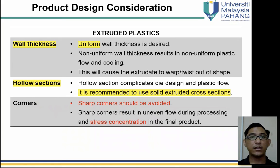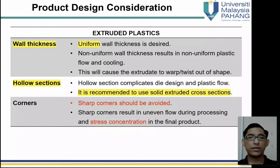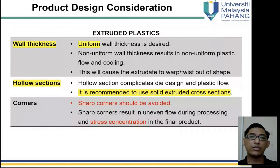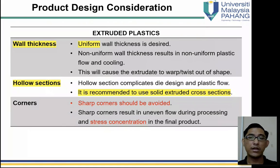For extrusion of plastics, the primary design consideration is that uniform wall thickness is desired. If we want to produce a continuous product with consistent wall thickness, extrusion is very suitable. Non-uniform wall thickness results in non-uniform plastic flow and cooling, which can cause the extrudate to warp and twist out of shape. Hollow sections complicate the die design and plastic flow — when there is a hollow section in an extruded product the process becomes more complicated, though it is still doable. It is recommended to use solid extruded cross-sections; hollow products are more suitable for injection molding.